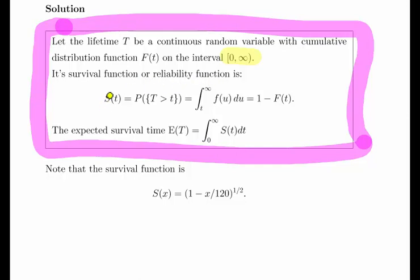The survival function or reliability function is S(t) = P(T > t), which is the integral from t to infinity of f(u)du. That's the probability density function in terms of another variable u, and that equals 1 - F(t). So essentially S(t) is the complement of F(t).